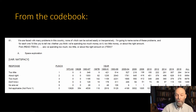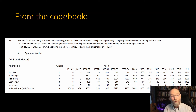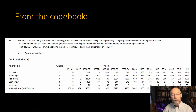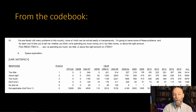The survey question started with a prompt: 'We're faced with many problems in this country, none of which can be solved easily or inexpensively. I'm going to name some of those problems and for each one, tell me whether you think we're spending too much money, too little money, or about the right amount.' For space exploration, responses were coded: too little = 1, about right = 2, too much = 3, don't know = 8, no answer = 9.